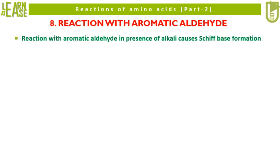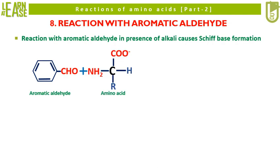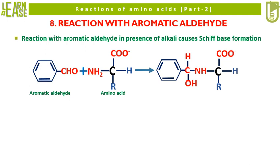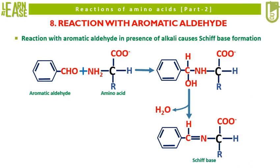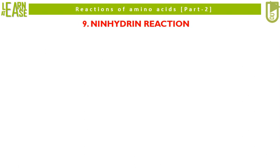Now I will explain the eighth reaction, that is reaction with aromatic aldehyde. Reaction with aromatic aldehyde in presence of alkali causes Schiff base formation. When aromatic aldehyde such as benzaldehyde reacts with amino acid, condensation occurs. This condensed intermediate is unstable and it readily loses a water molecule to form a Schiff base. A molecule possessing a C=N double bond is termed as a Schiff base. Carefully see the portrayed reaction to understand the mechanics of Schiff base formation.